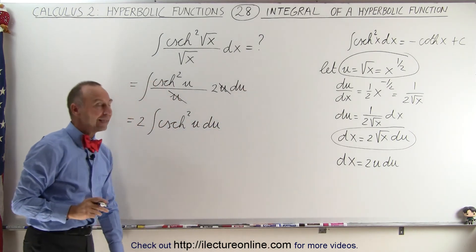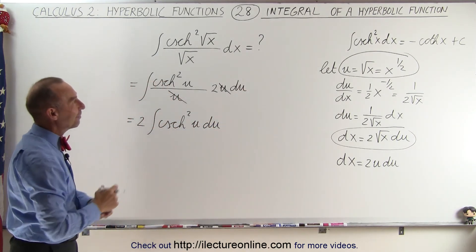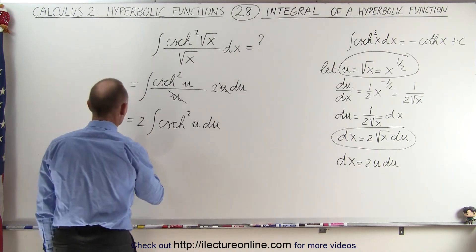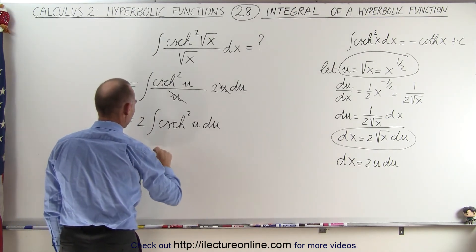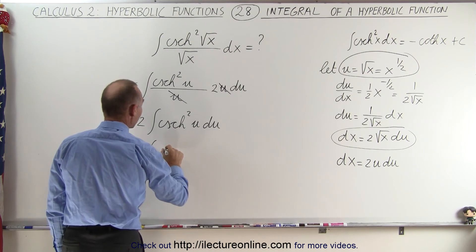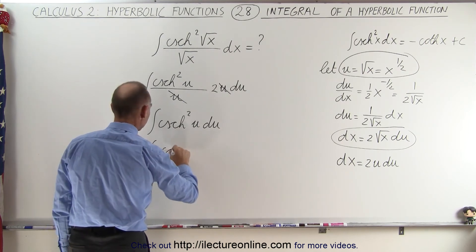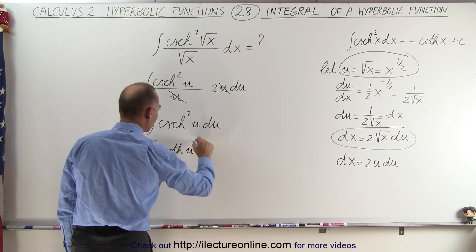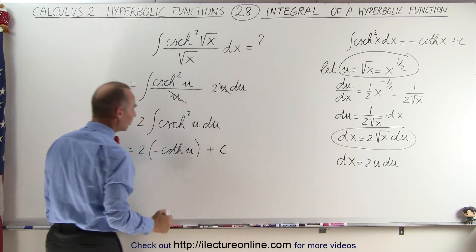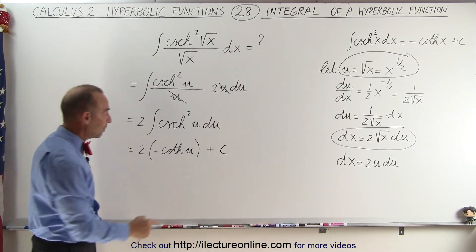And then I have to look at my guide there that tells me that's the negative hyperbolic cotangent. So this is equal to 2 times the negative hyperbolic cotangent of u plus a constant of integration.